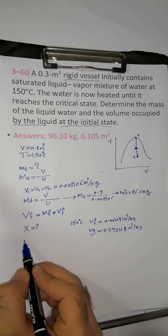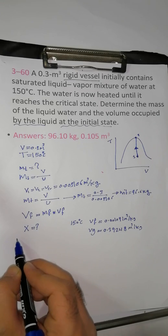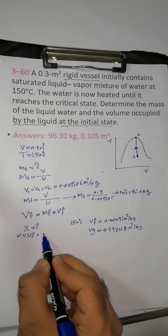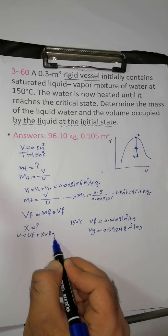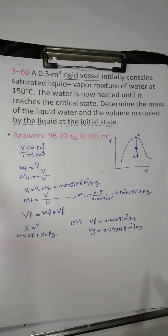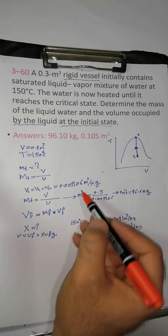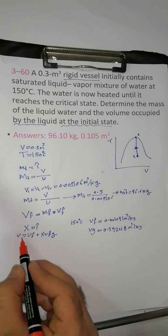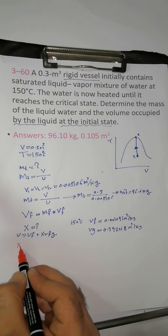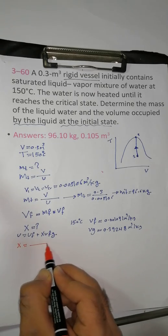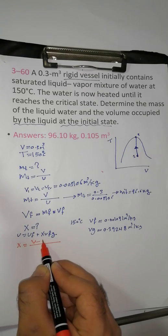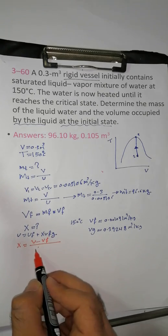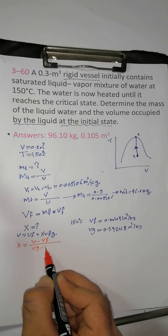Using V = Vf + x·Vfg, where x equals (V minus Vf) divided by Vfg, which equals (Vg minus Vf).